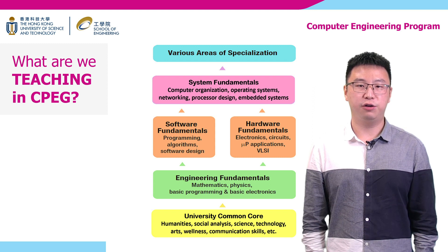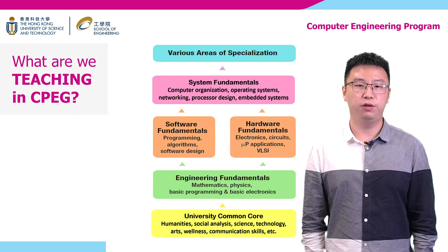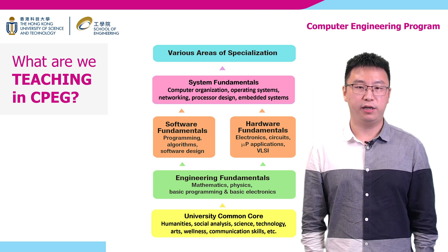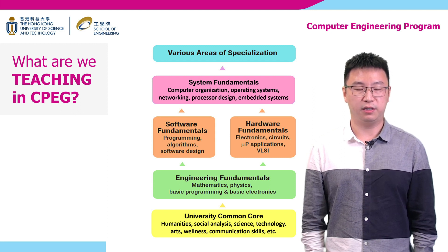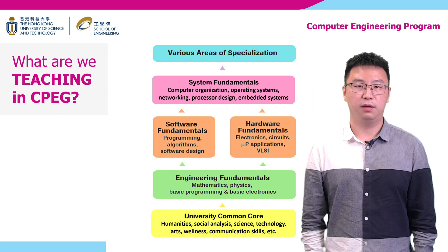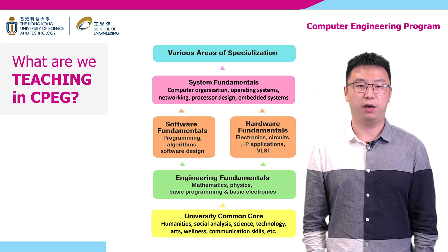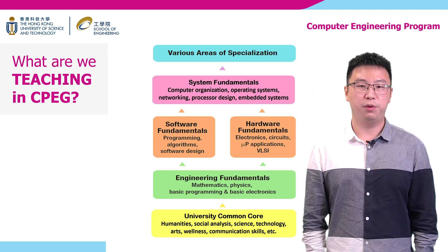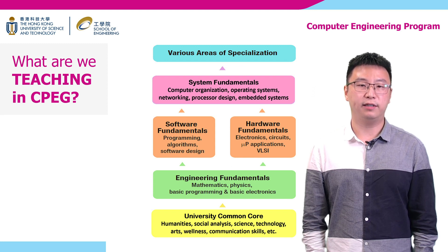CPAC is a specialized engineering discipline in our school of engineering. CPAC students take university common core courses related to humanities, social analysis, wellness, and communication skills in their junior years. They also study engineering fundamentals such as mathematics, physics, and basic programming. In their senior years, they take required courses from two main areas: software and hardware. Fundamental courses from both areas, such as algorithms and electronics, are required. System fundamentals, such as computer organization and embedded systems, are also included in the curriculum.